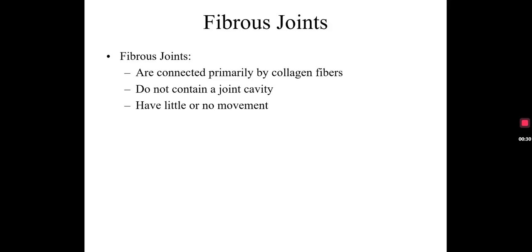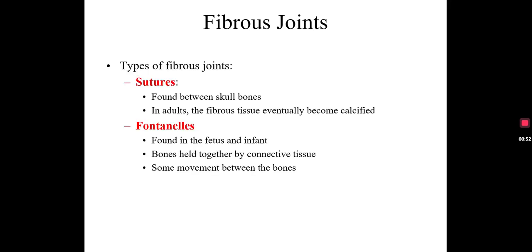With fibrous joints, the bones are very close together and we have very little movement or even no movement. The reason for that is the joints are connected by collagen fibers. There's no joint cavity, no fluid in there, and little or no movement between the bones. We have four different types of fibrous joints, or subtypes. The first one we actually know a little bit about from when we studied osteology, which was bones. The sutures are the first type of fibrous joint.